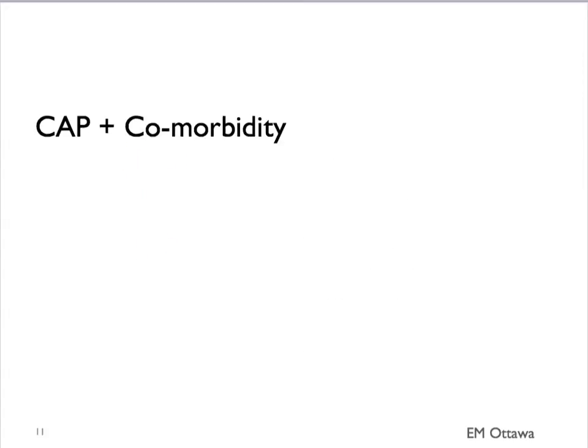What about the community-acquired pneumonia patient with a comorbidity? If their comorbidity is general immunosuppression, then the IV form of antibiotics that we just talked about, i.e. fluoroquinolones or ceftriaxone plus macrolides, would be good choices.